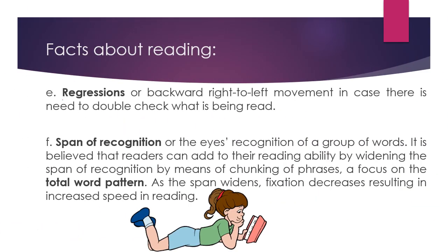We also have regressions — backward, right-to-left movements — in case there is a need to double-check what is being read. This is where a reader tends to go back because he or she wants to verify something.